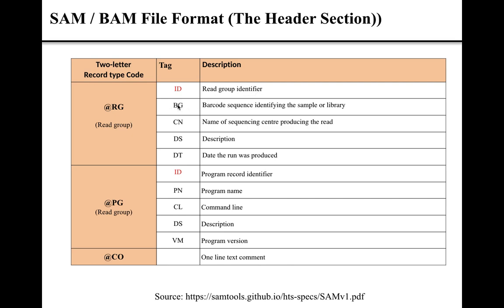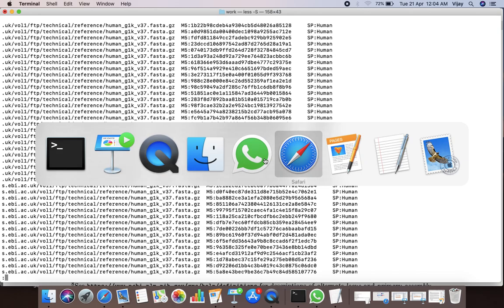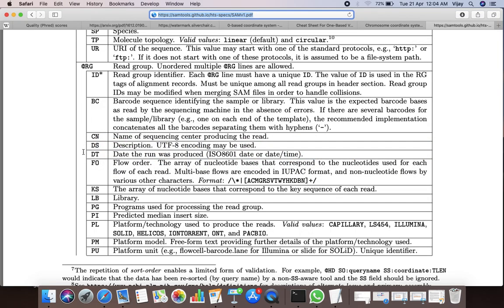The value of the BZ tag represents the barcode sequence identifying the samples of the library. The value of the CN tag describes the name of the sequencing center producing the reads. The value of the DS tag is the description about the read group. The value of the DT tag in the RG line is the date the run was produced.